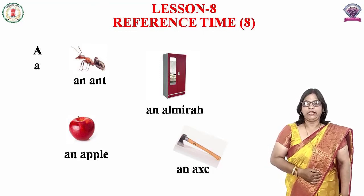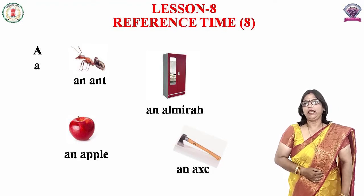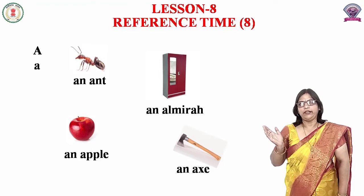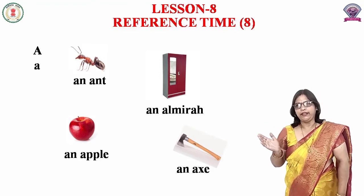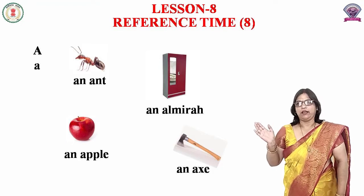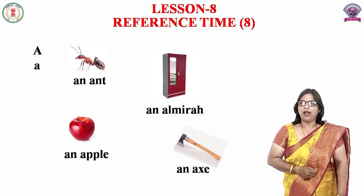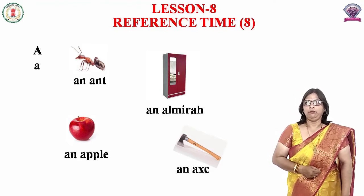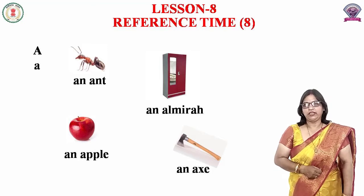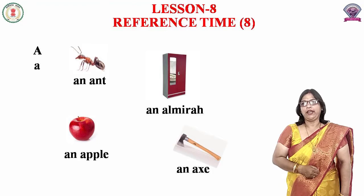A से बनने वाले कुछ words जानेंगे। पहला word है ant — A, N, T, ant। Second word है almira — A, L, M, I, R, A, almira। Third word है apple — apple सभी लोग जानते हैं, apple तो सब खाते हैं, हैं ना? तो A से बनने वाला ये word है, apple।